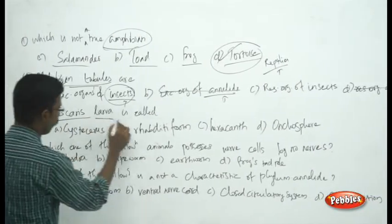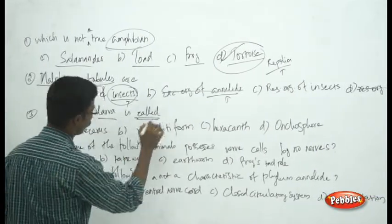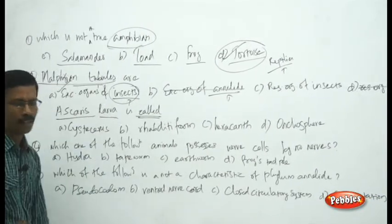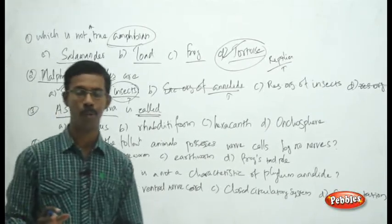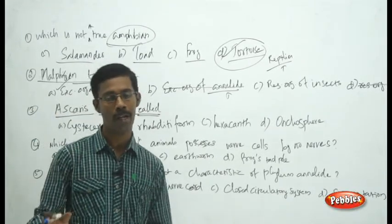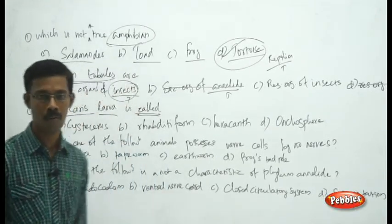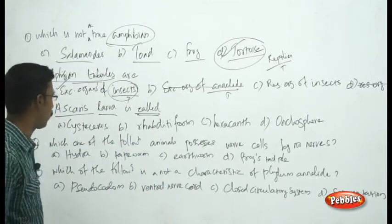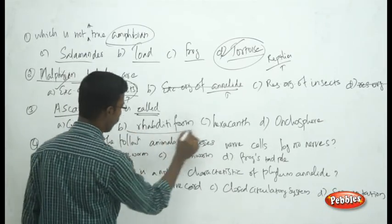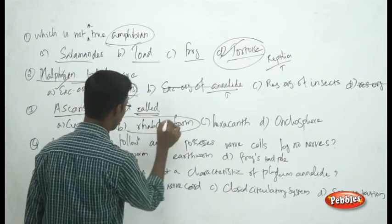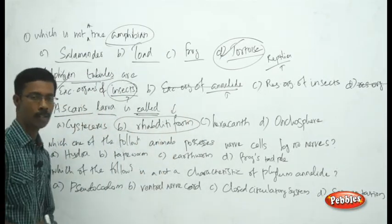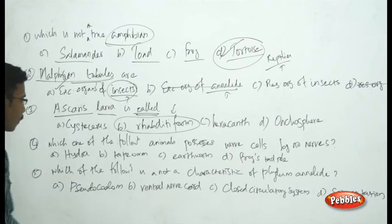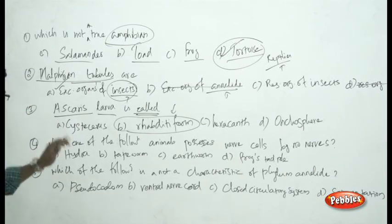See the next question: Ascaris larvae is called... This is a straightforward question. You should know the name of the larval form of Ascaris. The rhabditiform larva is the larval form of Ascaris.